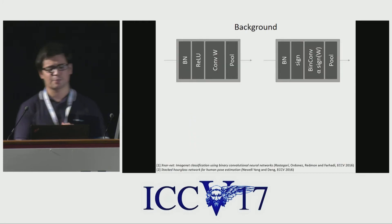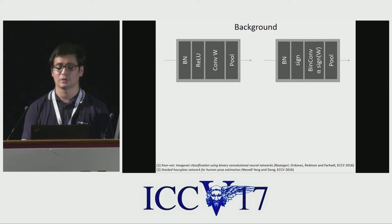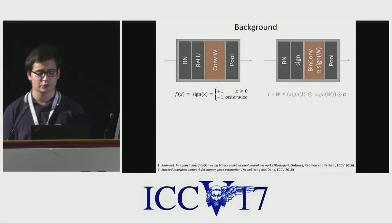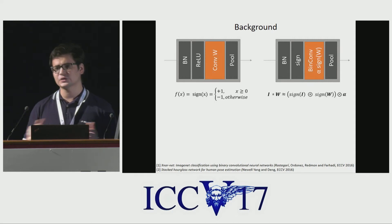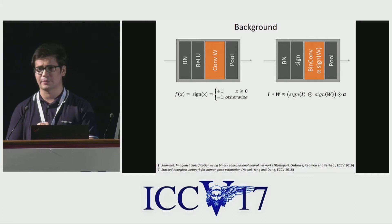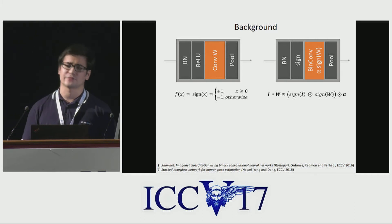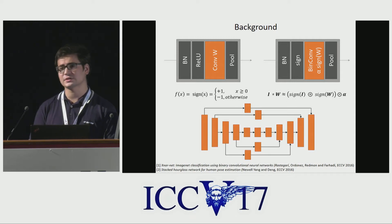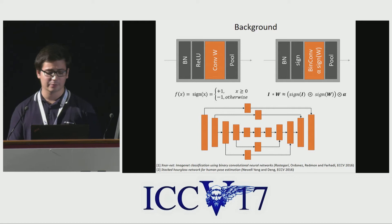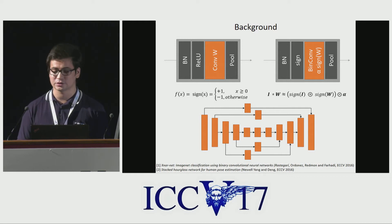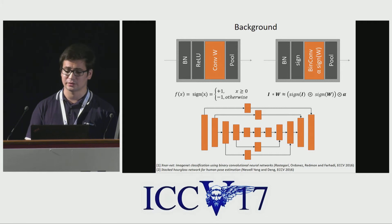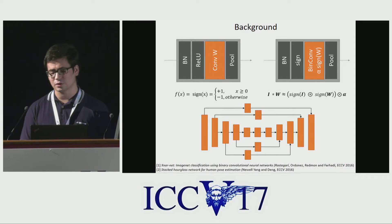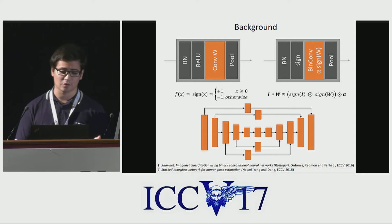The network binarization process proposed by Rastegari et al. is as follows. First, ReLU is replaced by the sign function, and then both the input and the convolutional weights are binarized in a similar way. An additional alpha term is further used to boost the performance, computed as the average of the absolute weight values. As we focus on human pose estimation and face alignment, for our experiments we use the hourglass architecture introduced by Newell et al., which is well-suited for such fine-grained recognition tasks. We believe that the proposed residual block improvements are independent of the architecture used.